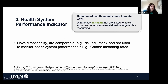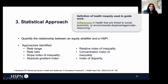The second component is the health system performance indicator. These should have directionality, should be comparable, and are used to monitor health system performance. The last component is the statistical approach, and these are what are used to quantify the relationship between an equity stratifier and a health system performance indicator.